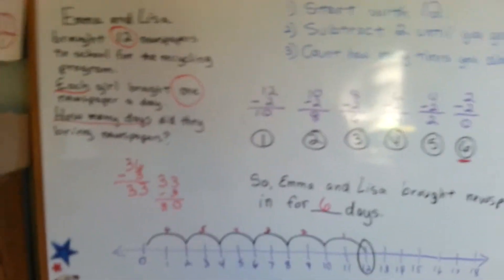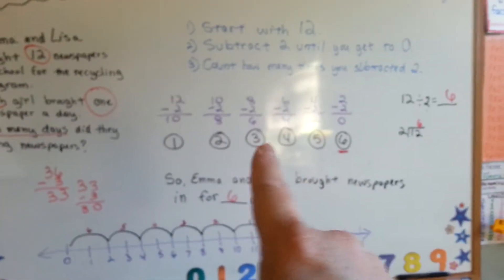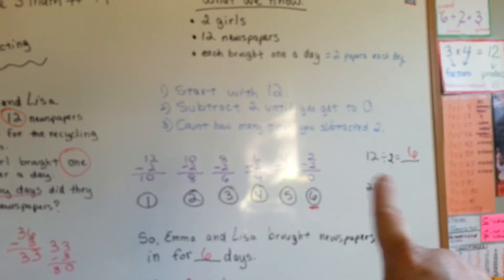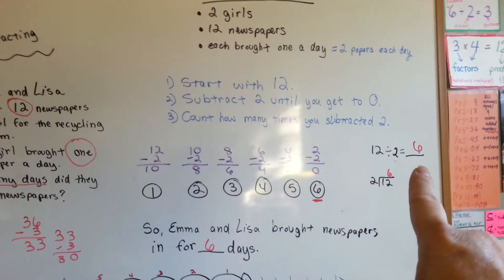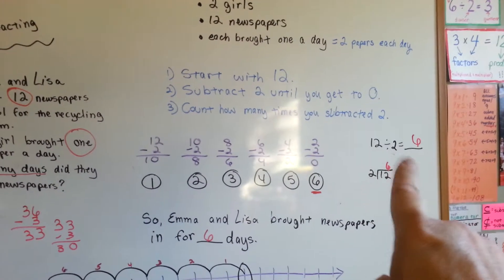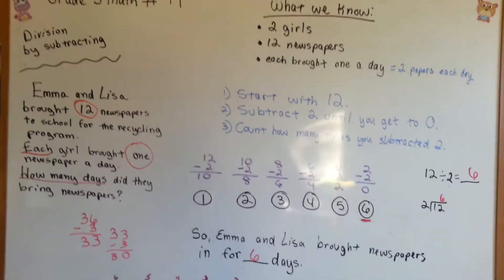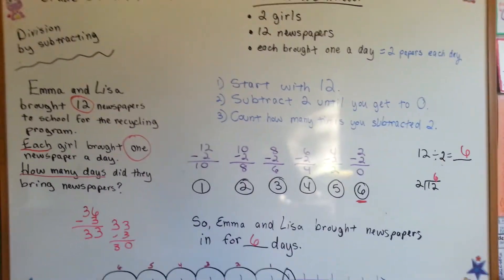Now, this is a very, very long way to do division. Your best bet is to just memorize your multiplications table, because if you remember division is the opposite of multiplication, and you would know that six times two is twelve. See? It's the inverse operation. But, I just wanted to show you how you could use subtraction to do division.